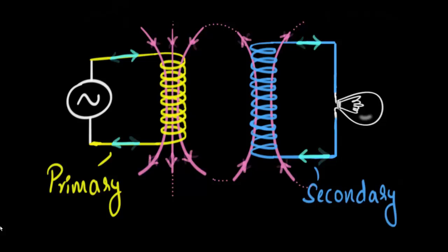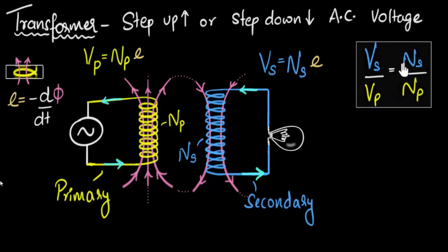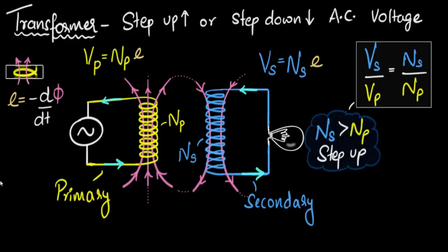In the secondary and primary are not the same. If I divide them, we'll get the relationship between them. We get Vs divided by Vp equals Ns divided by Np. This means that if the number of turns in the secondary is more than the number of turns in the primary, like shown over here, then notice the voltage in the secondary would be higher than the voltage of the primary or the voltage of the supply. And we call this the step up transformer, increasing the voltage.